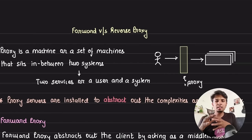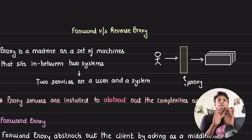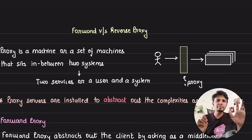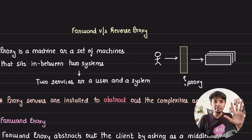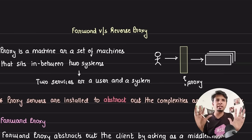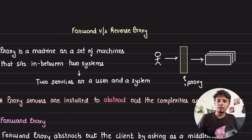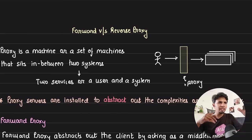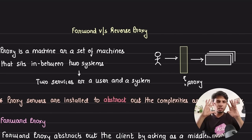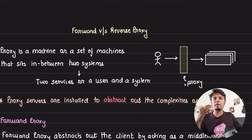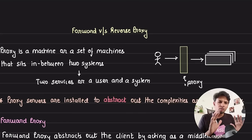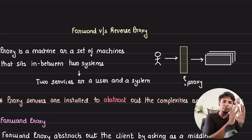A proxy is a machine, or set of machines, that sits between two systems. The two systems can be a user and a backend system, two backend systems, or anything. In most cases, a proxy is there to abstract out some complexities or untrusted environments, with the common intention of abstracting out the two sides.